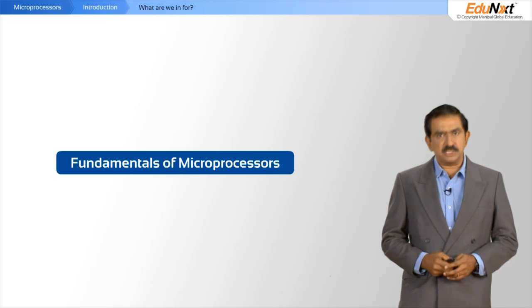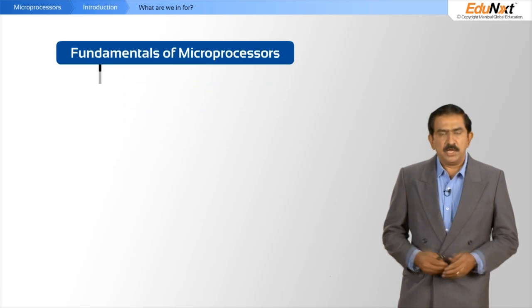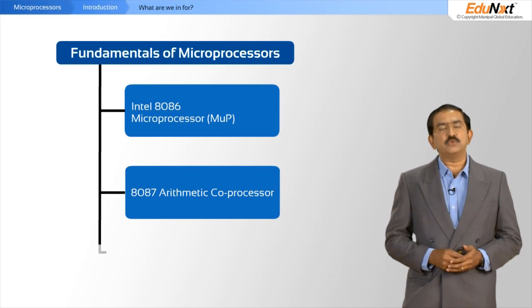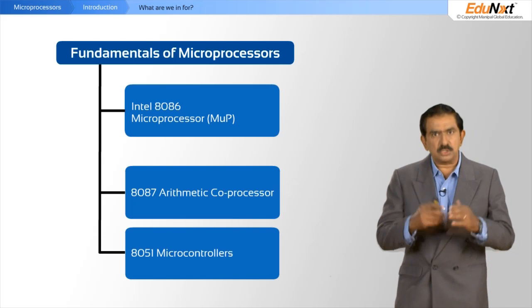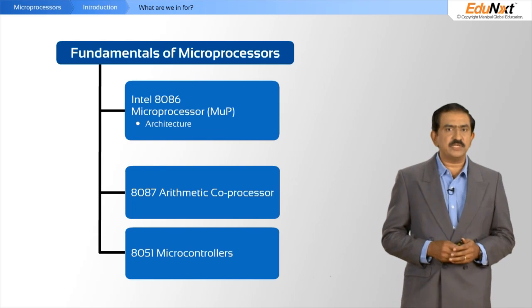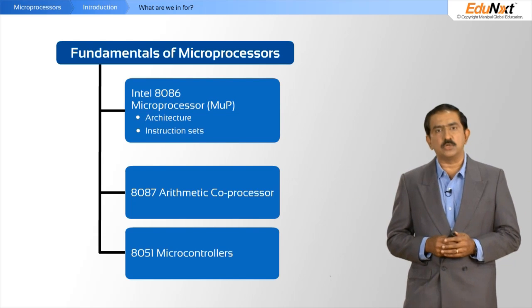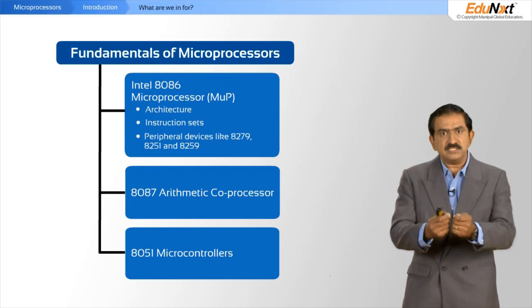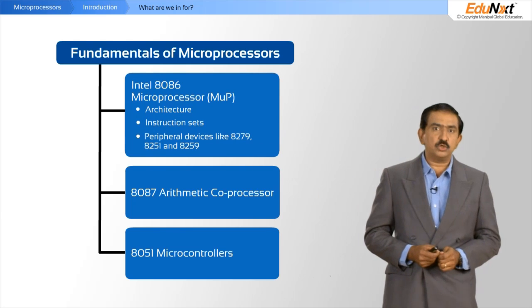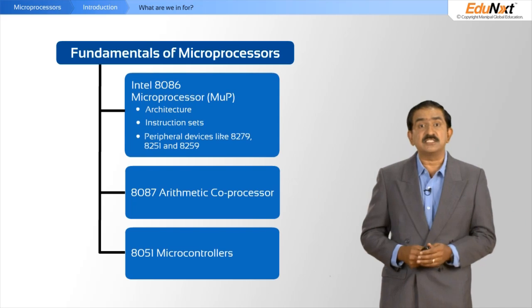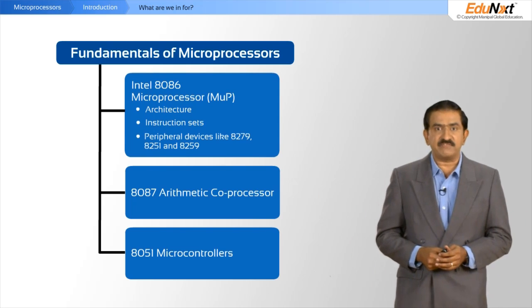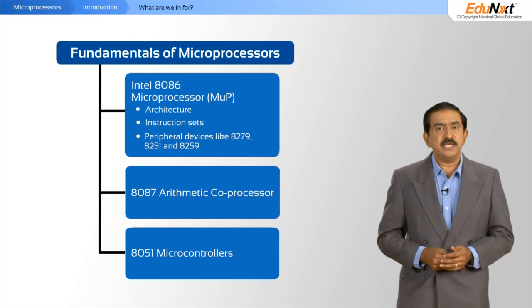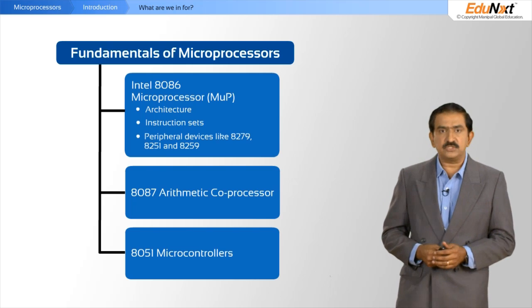What I will cover is a little bit of fundamentals on microprocessors in general, then zoom down very quickly into the 8086. I will talk about the architecture of the 8086, its instruction sets, and various peripheral devices that you need to work with the 8086 effectively — devices like the 8279, the 8251, the 8259, and so on.